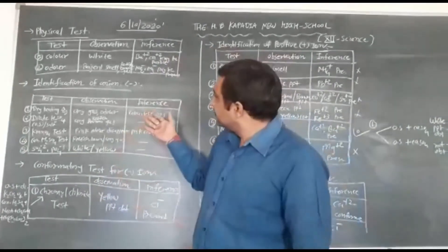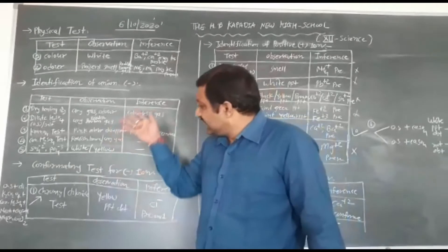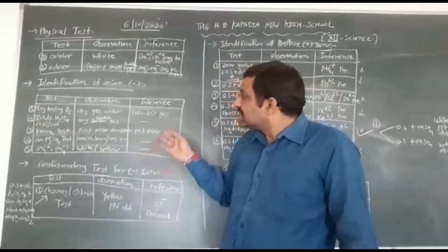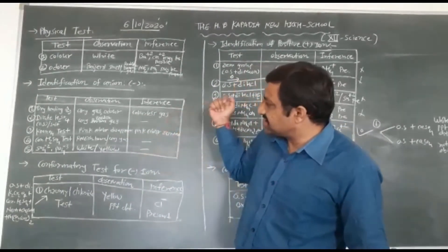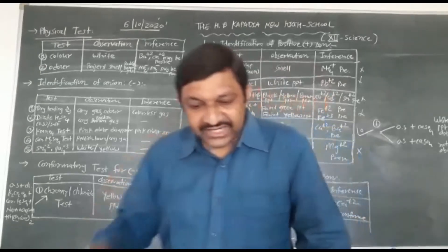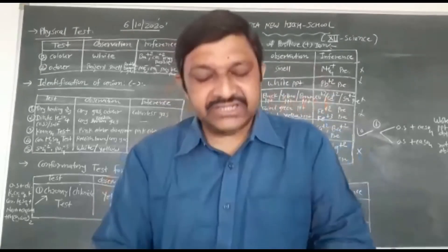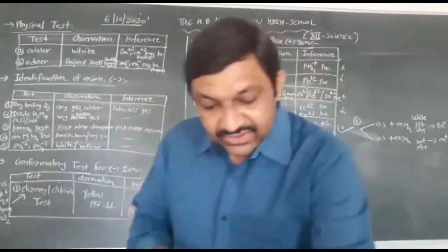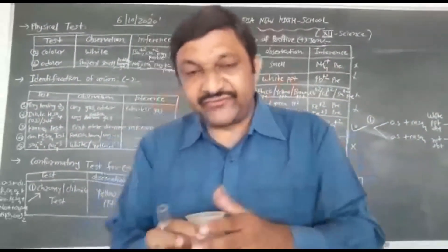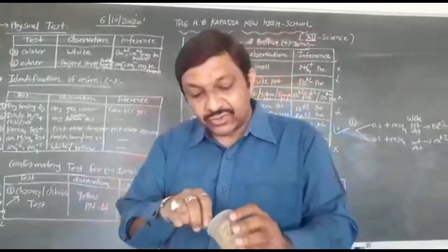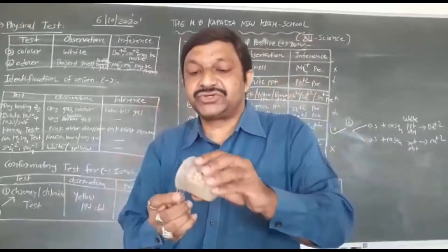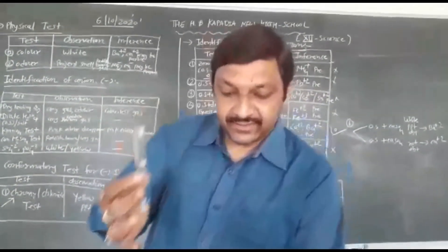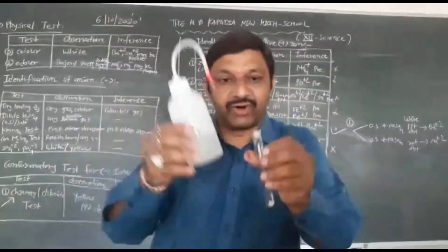Now we will perform the practical. First, the anion test — dry heating test. Here is your chemical, calcium chloride. We will take calcium chloride and prepare an original solution by adding distilled water.